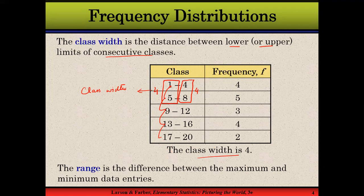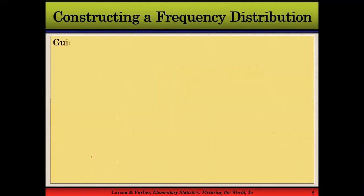One more concept to understand is range. Range is the difference between the maximum and the minimum value in the data set. For example, if the data set is two, six, eight, and twelve, the range R equals twelve minus two, which gives ten. In order to calculate class width, we first need to calculate the range.